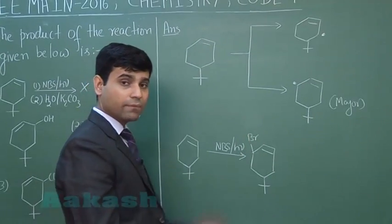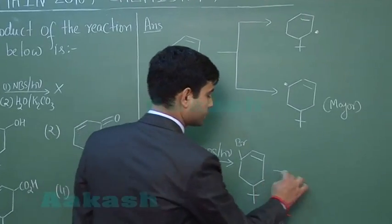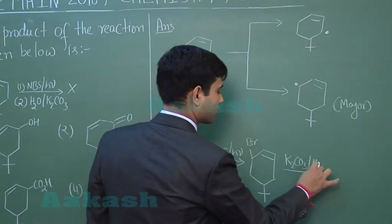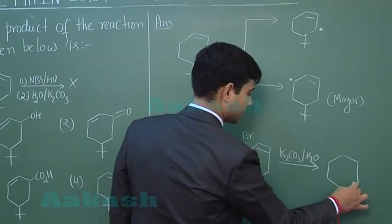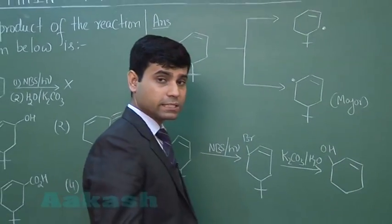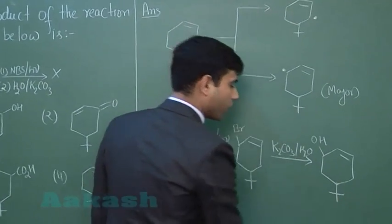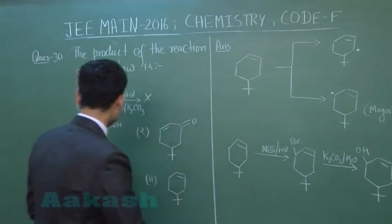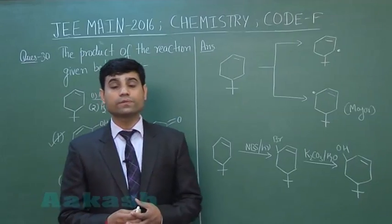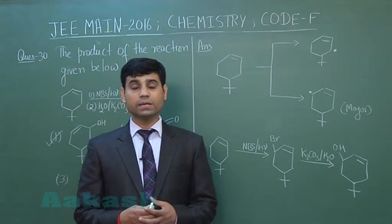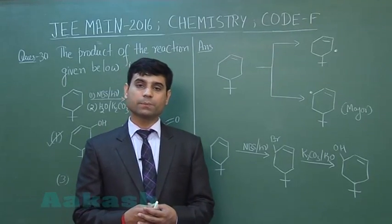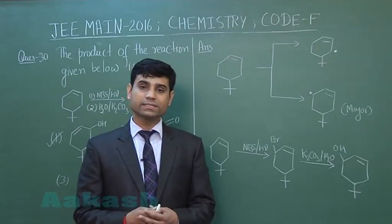After that, we treat with H2O in presence of K2CO3. Hydrolysis takes place and nucleophilic substitution of bromine occurs with OH, giving the final product, which matches option 1. This was the last question of the JEE 2016 chemistry section paper. All the best students for your results. Thank you.